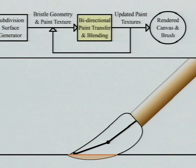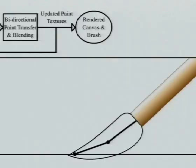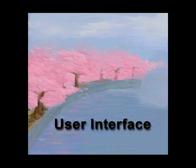Our paint model allows bidirectional paint transfer between the canvas and brush. Other important features, such as paint blending, drying, and complex brush loading, are also supported and rendered to the screen.